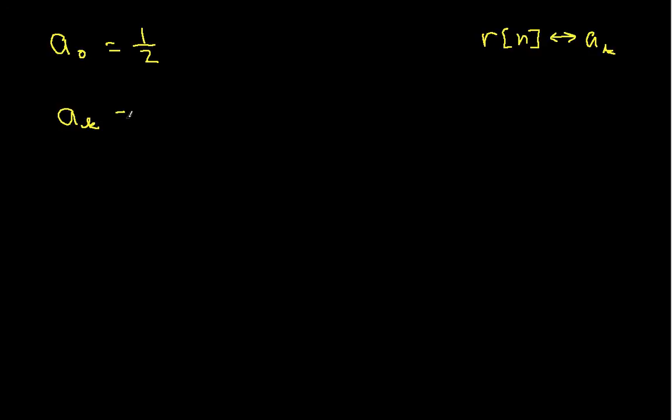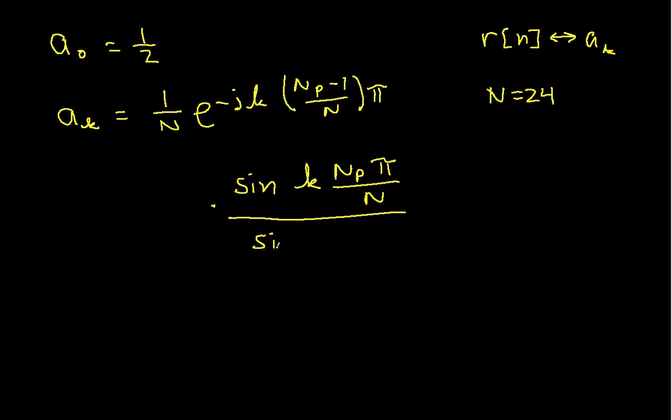And so A0 will be 1 half for this case. A sub K, where K is not 0, will be 1 over N. N here is 24. So my square wave and my sine wave both have a period of 24. So it's 1 over N times E to the minus Jk Np minus 1 over N times pi times sine of K Np pi over N divided by sine k pi over N. Okay, this is the formula for the Fourier series coefficients of a square wave.